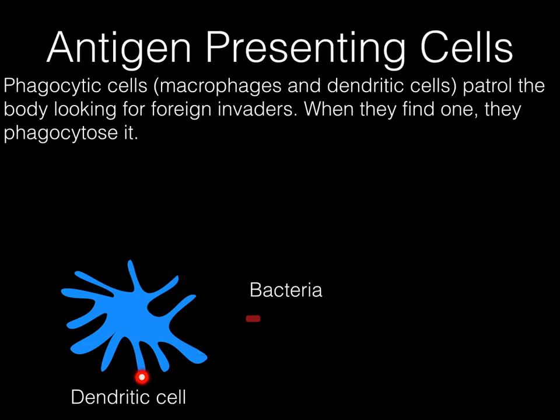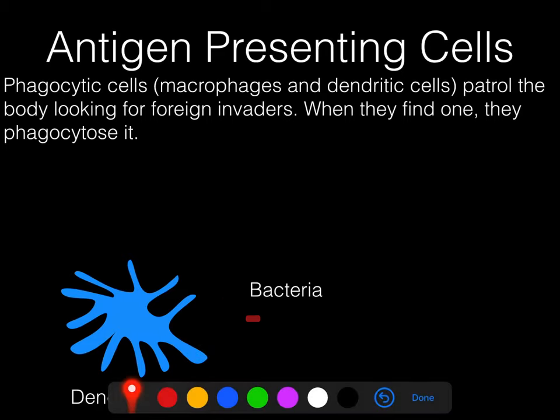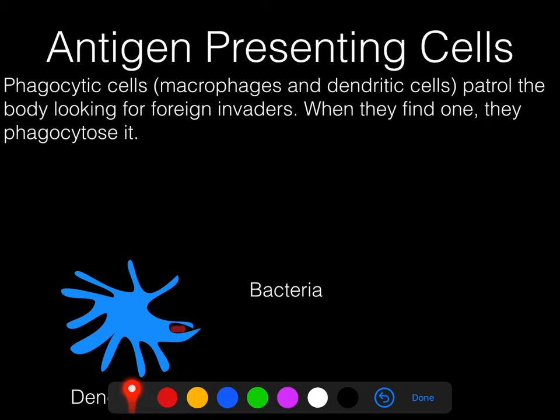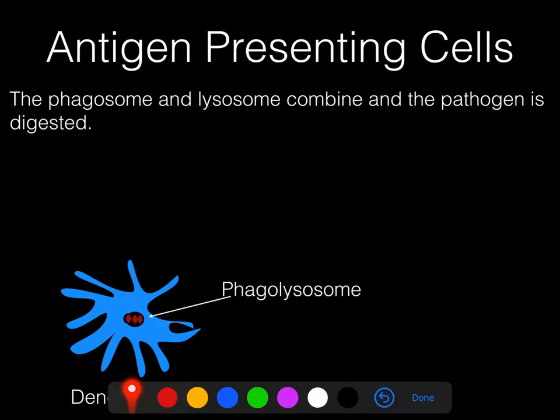Here we have a dendritic cell and a bacteria — it could have been a virus; they have PAMPs too and can also be phagocytized. I just picked bacteria because it was easy to draw. When the dendritic cell bumps into the bacteria, it phagocytizes it. Once engulfed, the bacteria ends up in a phagosome, which combines with a lysosome to make a phagolysosome, which digests the bacteria. Now, if this were a neutrophil, the process would pretty much end here — we'd just exocytose all the debris and be done.